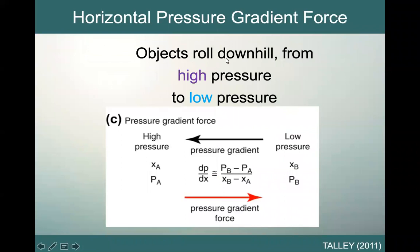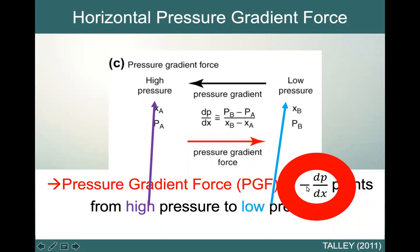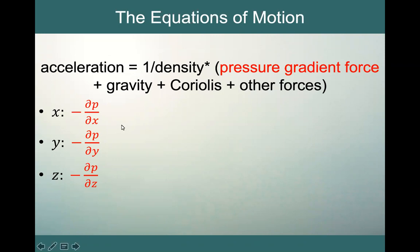But we know objects roll downhill from high pressure to low pressure. So when we look at the pressure gradient force, it actually goes in the opposite direction — it points from high pressure to low pressure. So our pressure gradient force in the X direction will be negative dp/dx. We can expand that to the Y direction, giving negative dp/dy, and similarly in the Z direction, negative dp/dz. These are written as partial derivatives because p could be changing in multiple directions.